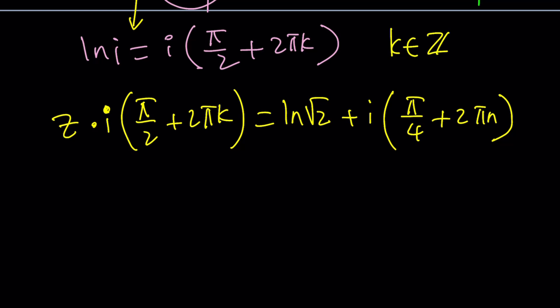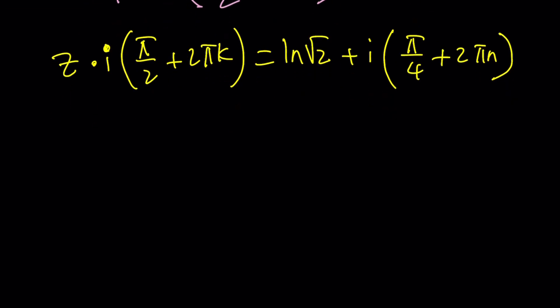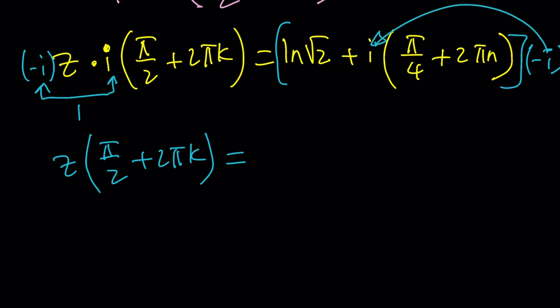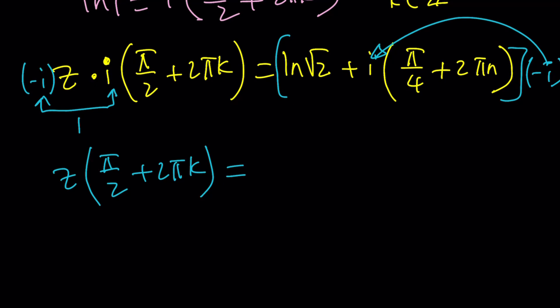So, from here, we could basically divide both sides by this thing. And we're going to get an i. But I want to get rid of the i first. Let's go ahead and multiply both sides by negative i first. Because that will eliminate the i. Notice that this is negative i squared, which is positive 1. So, now we get z times pi over 2 plus 2 pi k. And then on the right-hand side, we'll multiply everything by negative i. Again, this negative i will be multiplied by the positive i, giving us a positive 1. So, we can go ahead and write that first. First, pi over 4 plus 2 pi n, and then minus i ln root 2.